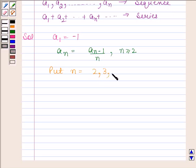By substituting n as 2 in this relation we get a₂ = a₂₋₁/2. This is equal to a₁/2, and a₁ = -1, so this is equal to -1/2.